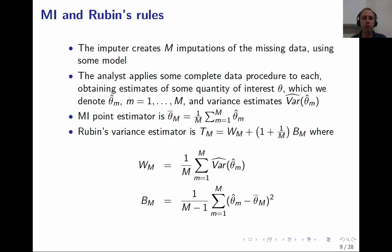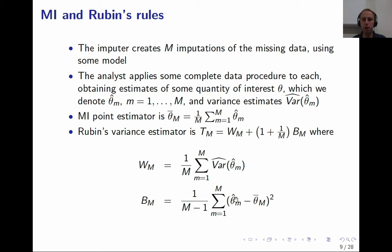Let's briefly review Rubin's rules and this notion of congeniality. The imputer creates M imputations of the missing data using some model, and then the analyst applies some complete data procedure to obtain estimates of parameter of interest theta — denoted theta-hat_m — along with corresponding variance estimates from analytical variance estimators. The MI point estimator is the arithmetic average across the M imputations, and Rubin's variance estimator is the sum of the within-imputation variance and the between-imputation variance, with a 1/M adjustment to account for the finite number of imputations.